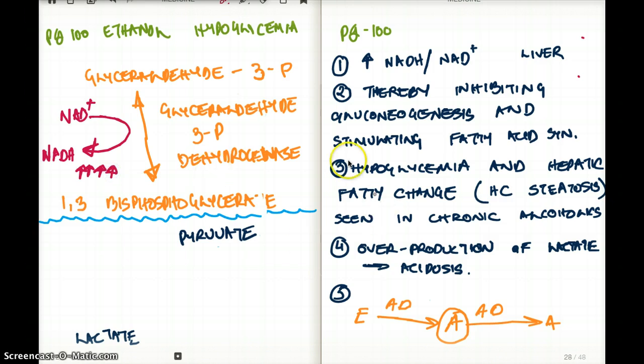So by the time glycolysis reaches pyruvate, we have lots of NADH in our system. As a result, what happens? Pyruvate cannot go through pyruvate dehydrogenase. Why?